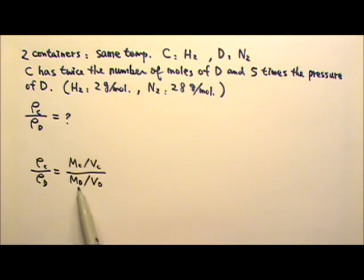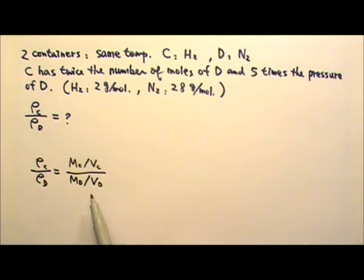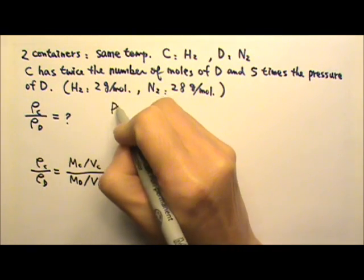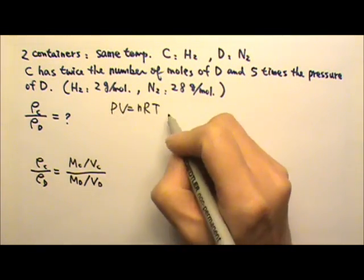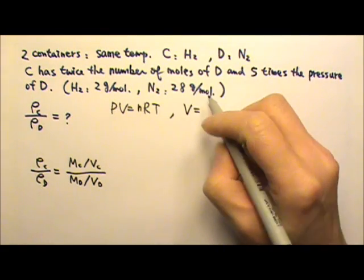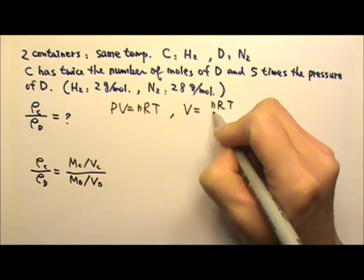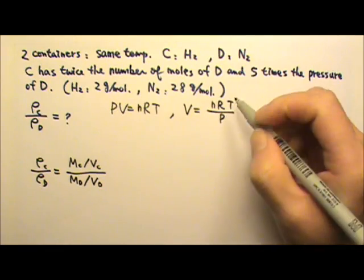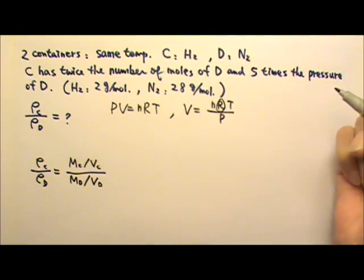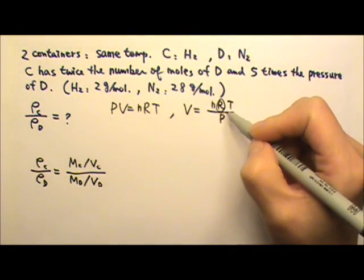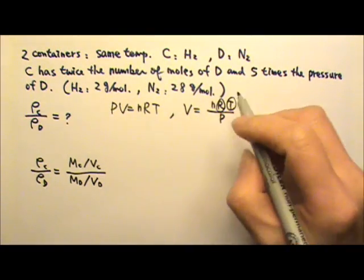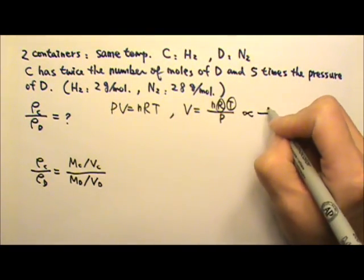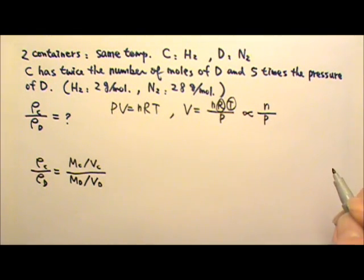Density is mass divided by volume, so we need information about volume. We use PV = nRT and solve for volume: V = nRT/P. Since R is a constant and both gases have the same temperature, the volume is proportional to the number of moles divided by the pressure.